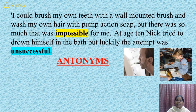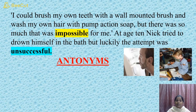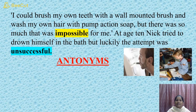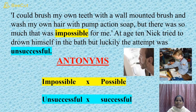At age 10, Nick tried to drown himself in the bath, but luckily the attempt was unsuccessful. His father had thrown him into the pool at 18 months with the aim of teaching him to swim courageously — but here Nick wanted to drown himself. What a suicidal attempt. As the saying goes, man proposes but God disposes. He is alive till today because God has a special plan for him. Here are two opposite words: 'impossible' and 'possible'; 'unsuccessful' and 'successful'. Make a note of them.